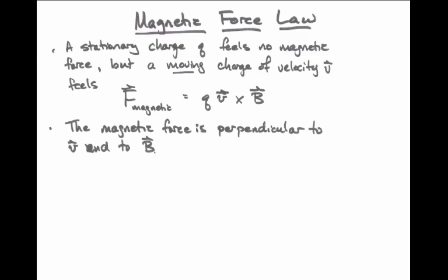Notice that because of the vector cross product, the magnetic force is always perpendicular to both v, the velocity, and b, the magnetic field.